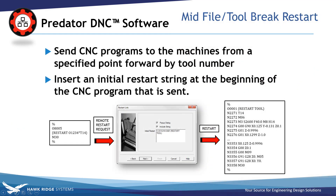The restart link is used to send CNC programs to the machines from a specific point forward. The most common use is after a tool breaks, with the goal of starting to send a CNC program at that specific tool number. The restart link searches to any point in the program and begins the transfer from that point. It can optionally insert an initial restart string at the beginning of the CNC program that you send. This can be done directly from the Predator DNC interface, or also using remote requests.